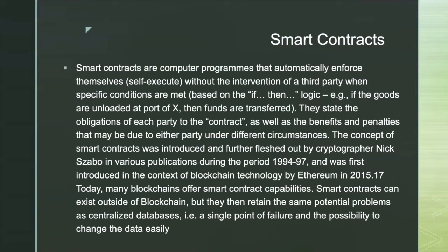Today, many blockchains offer smart contract capabilities. Smart contracts can exist outside blockchain, but they then retain the same potential problems as centralized databases — such as a single point of failure and the possibility of changing data easily.